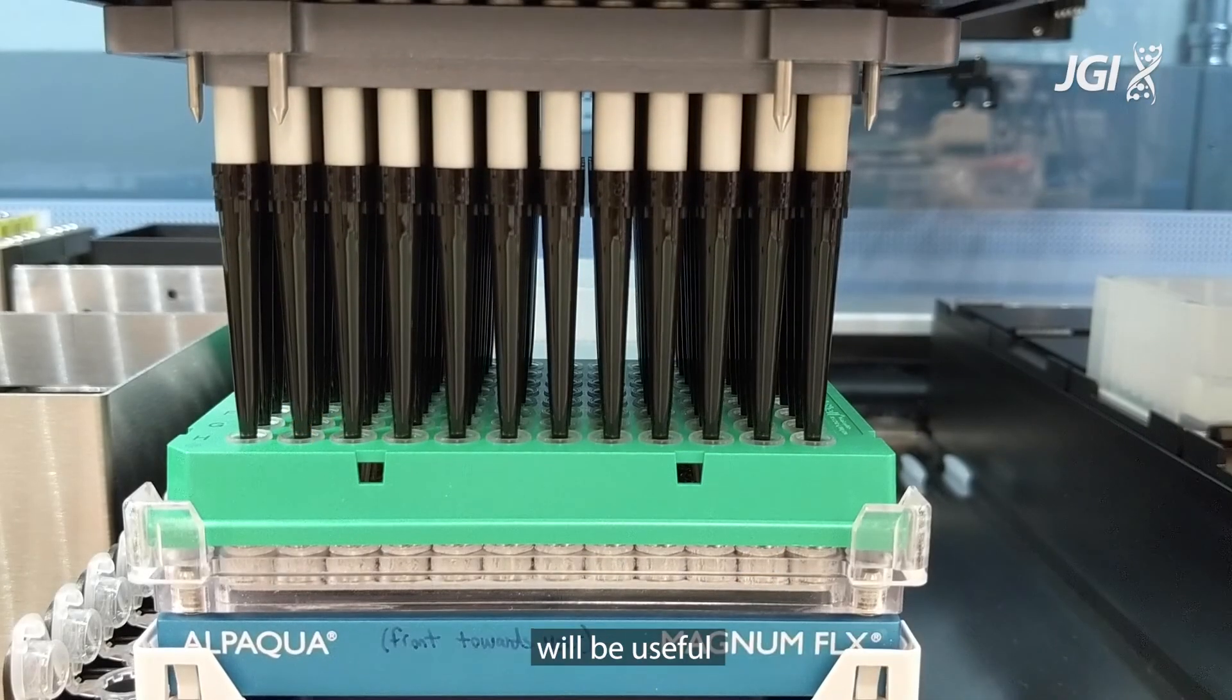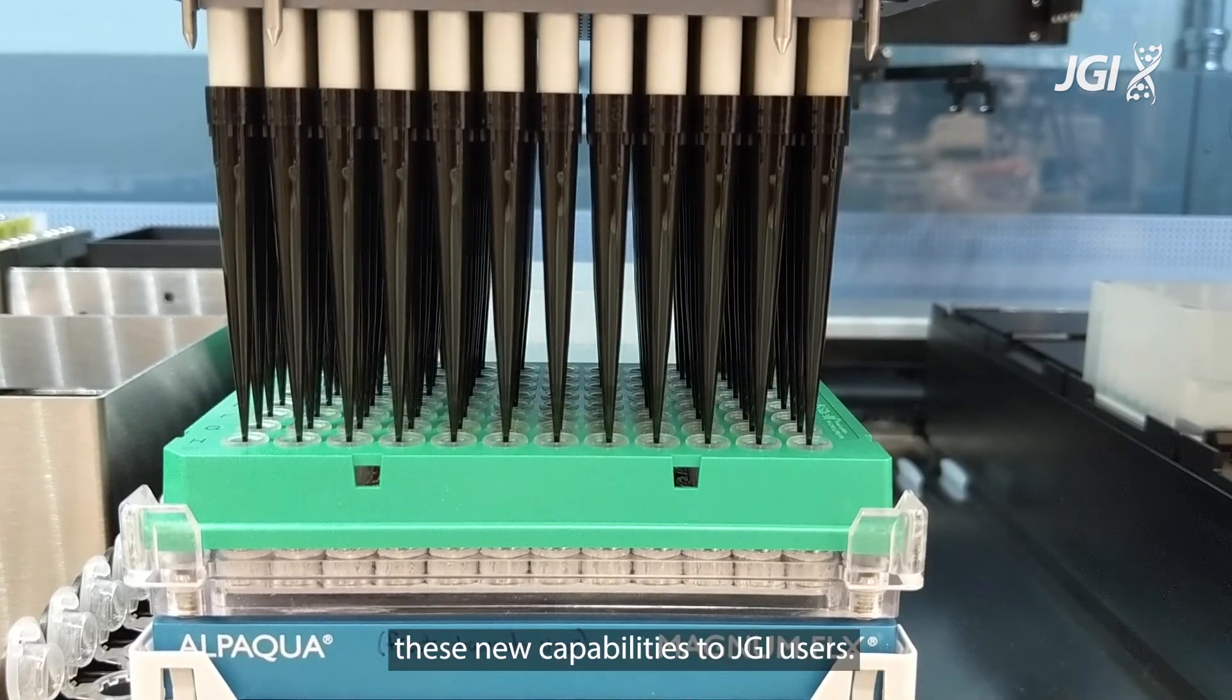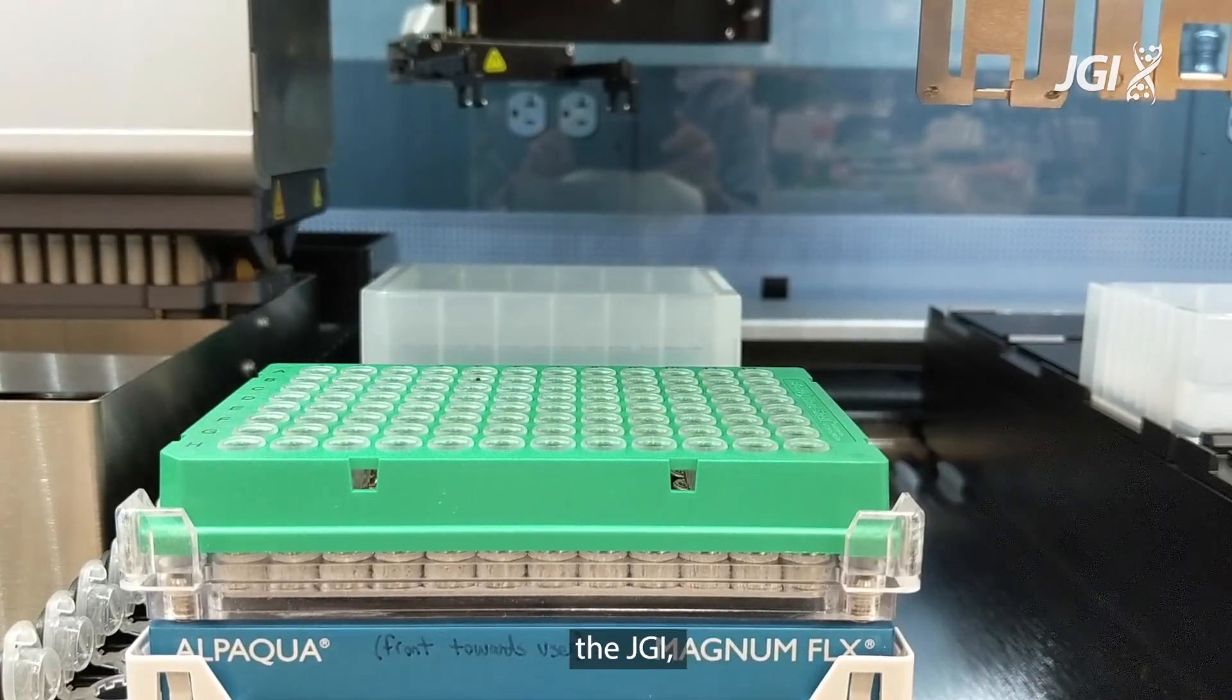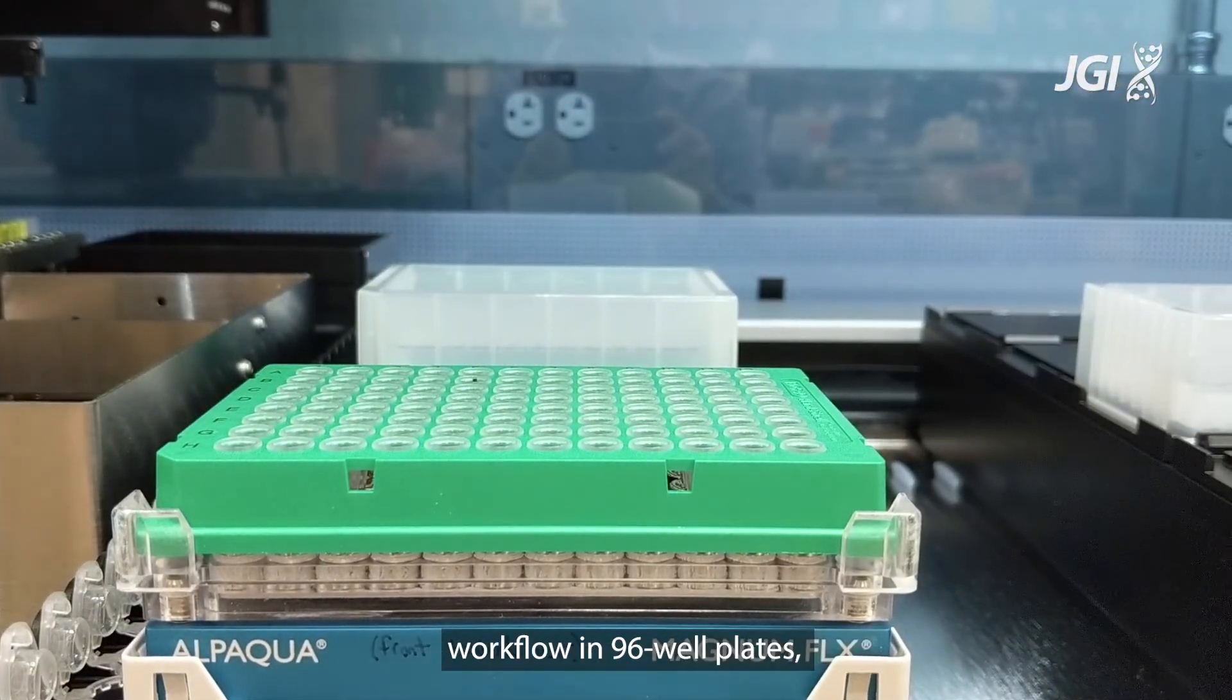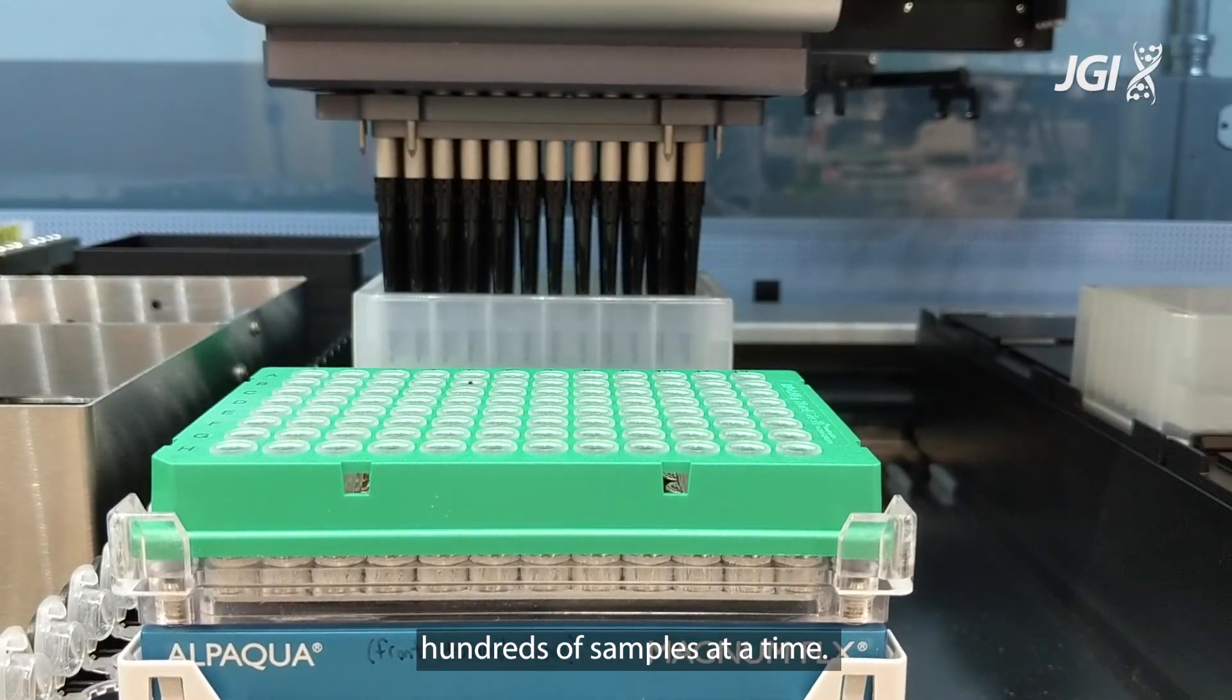We're hopeful that these new methods will be useful to the scientific community, and we're excited about offering these new capabilities to JGI users. To facilitate processing user samples at the JGI, we've developed a high throughput workflow in 96 well plates, using liquid handlers to process hundreds of samples at a time.